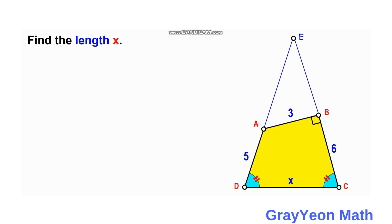Let's label the apex point as E. We let the equal side lengths of the isosceles triangle be Y, so segment EC equals Y and segment ED equals Y. Since AD is 5, the length AE is Y minus 5, and since BC is 6, the length BE is Y minus 6.